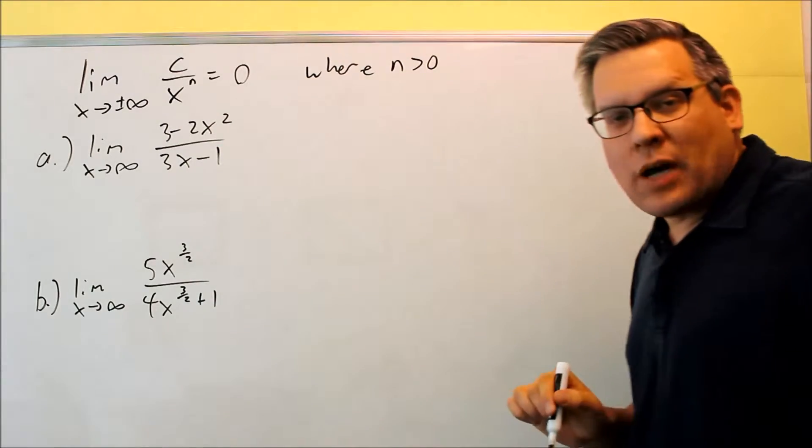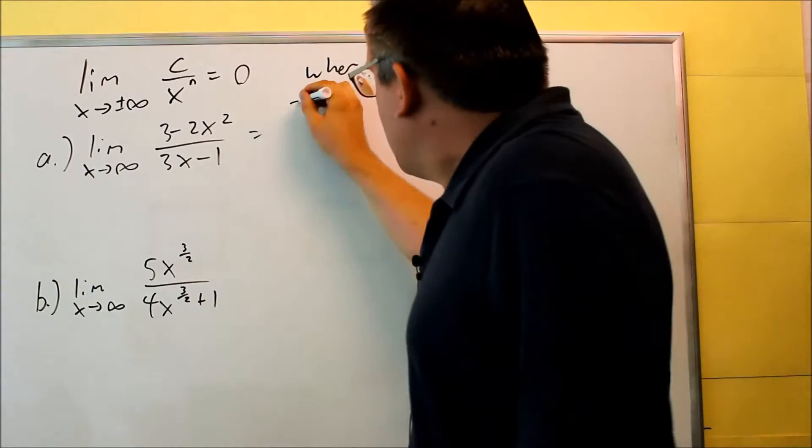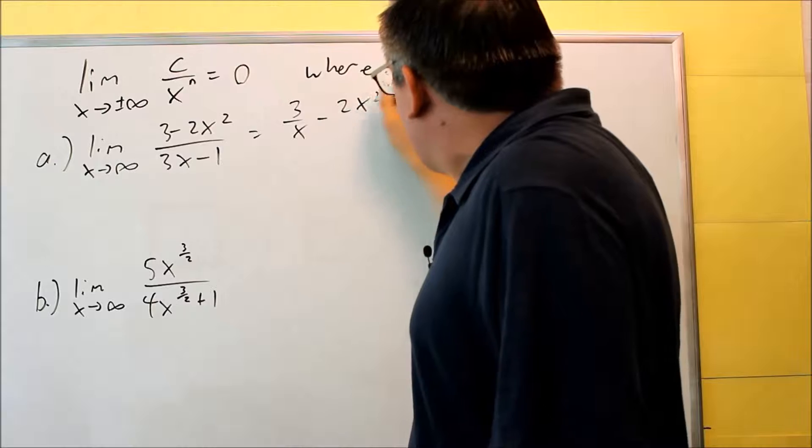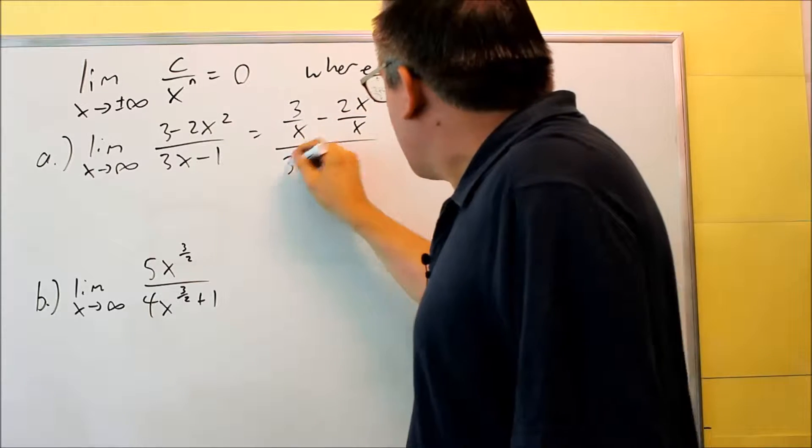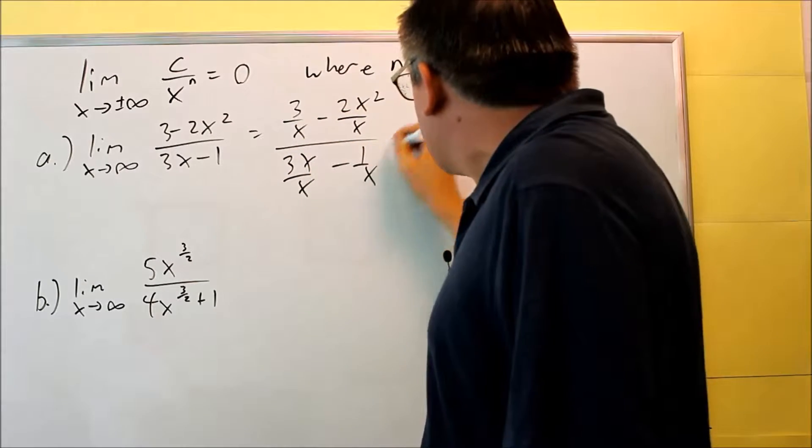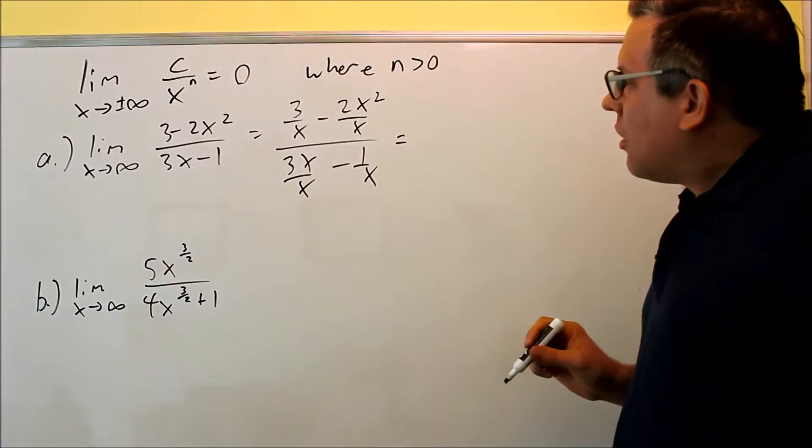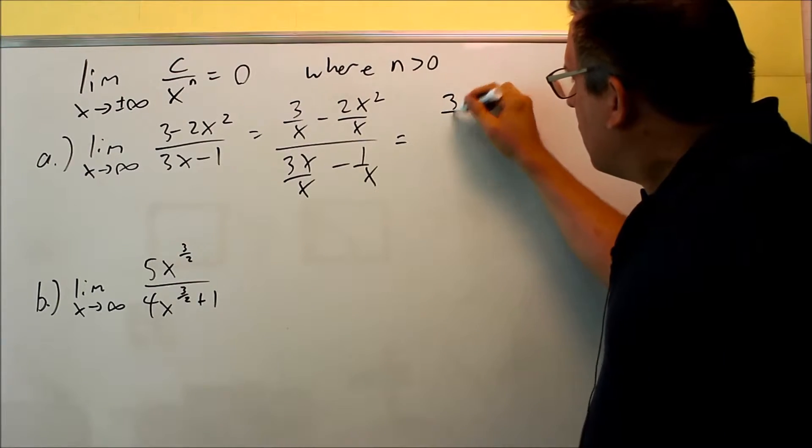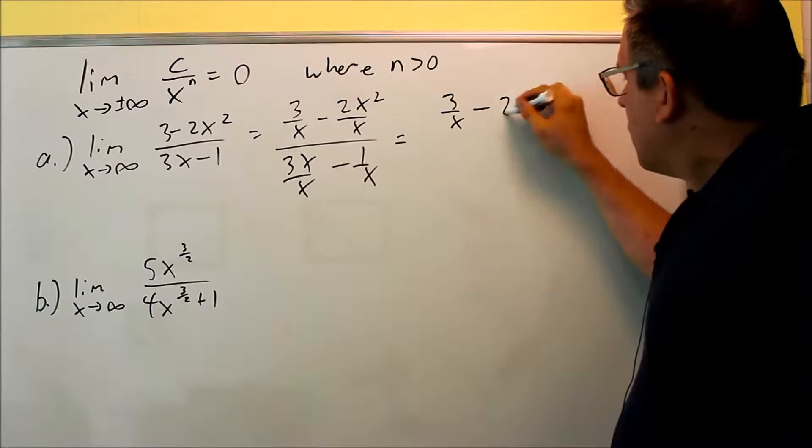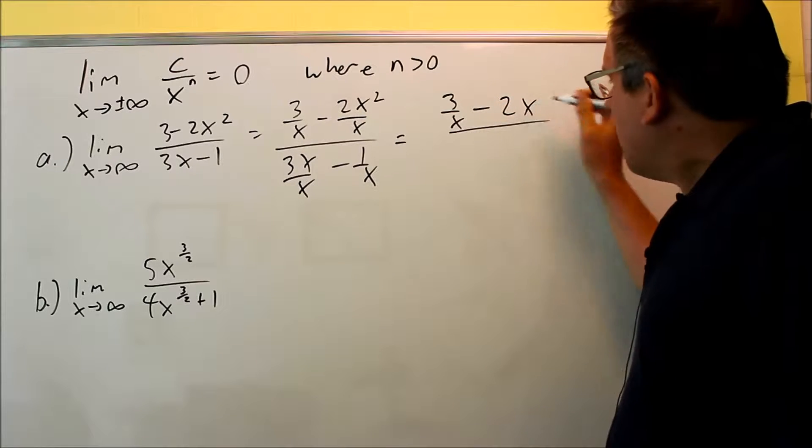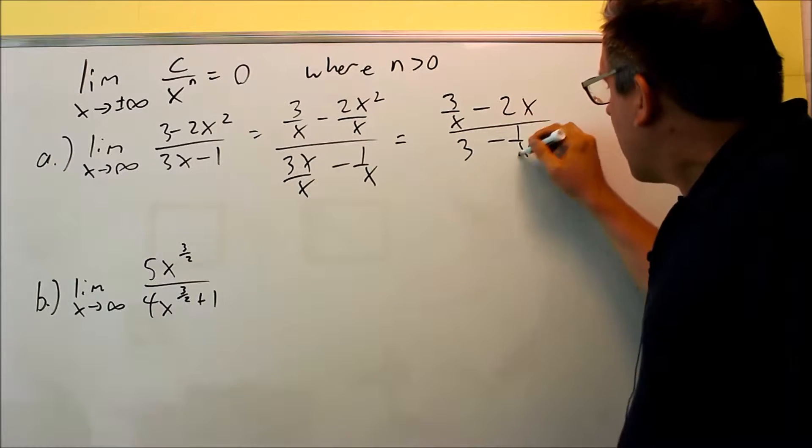We're dividing the top and bottom by the highest power in the bottom. 3 over x, 2x squared over x. The bottom here you get 3x over x minus 1 over x. All right, simplifying we can do next, you get this 2x there, the bottom here you get 3 minus 1 over x.